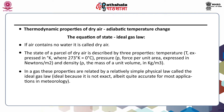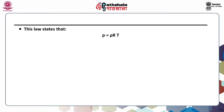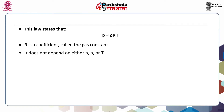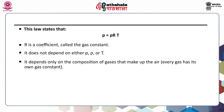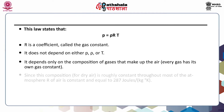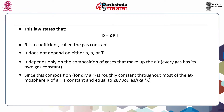The ideal gas law states P = rho × R × T. R is the gas constant, which does not depend on P, rho, or T, but only on the composition of gases that make up the air. Every gas has its own gas constant. Since the composition of dry air is roughly constant throughout most of the atmosphere, R for air is constant and equal to 287 joules per kilogram per degree Kelvin.